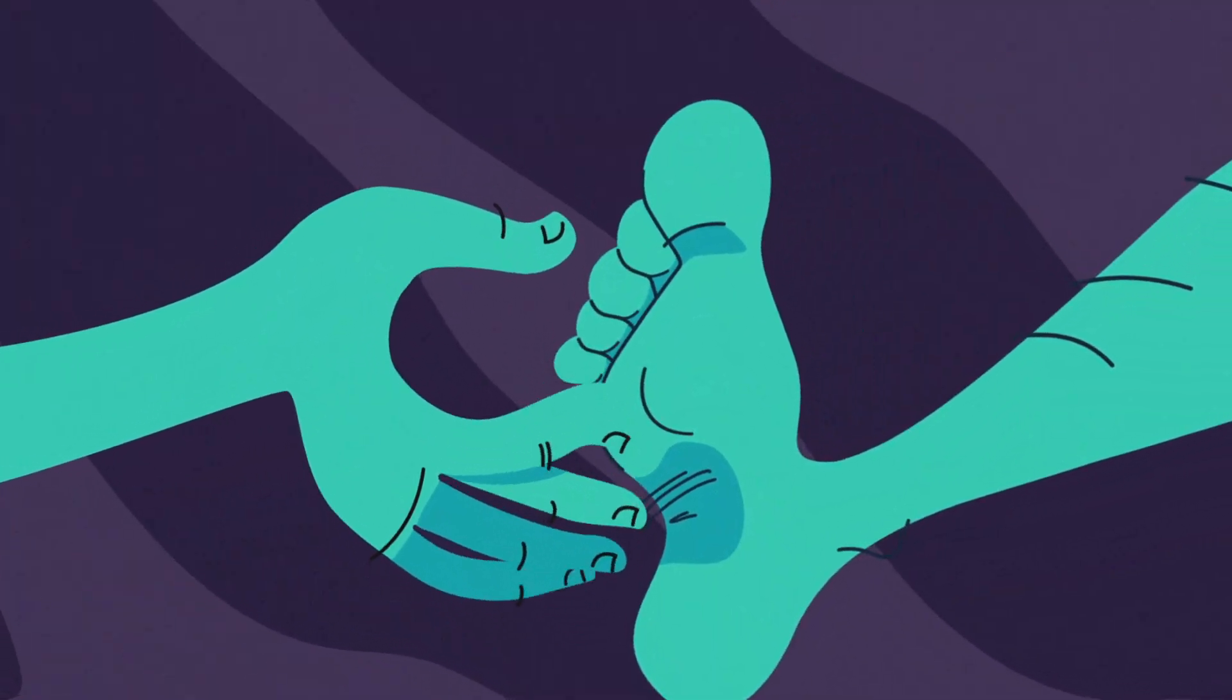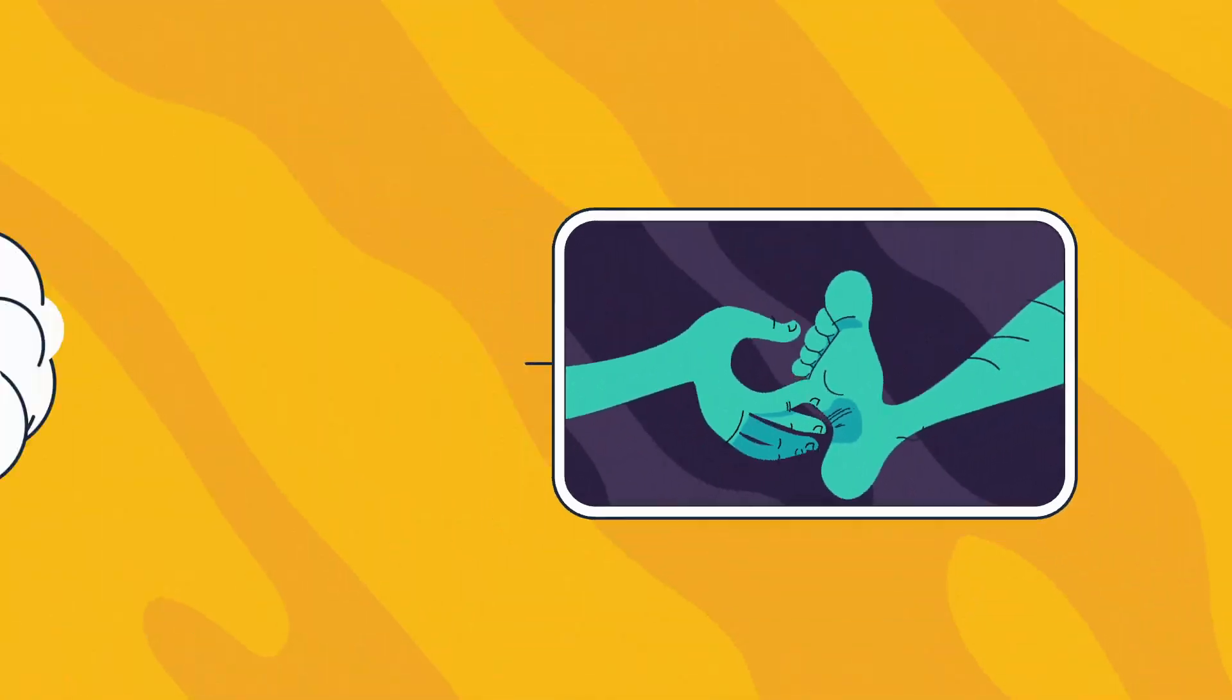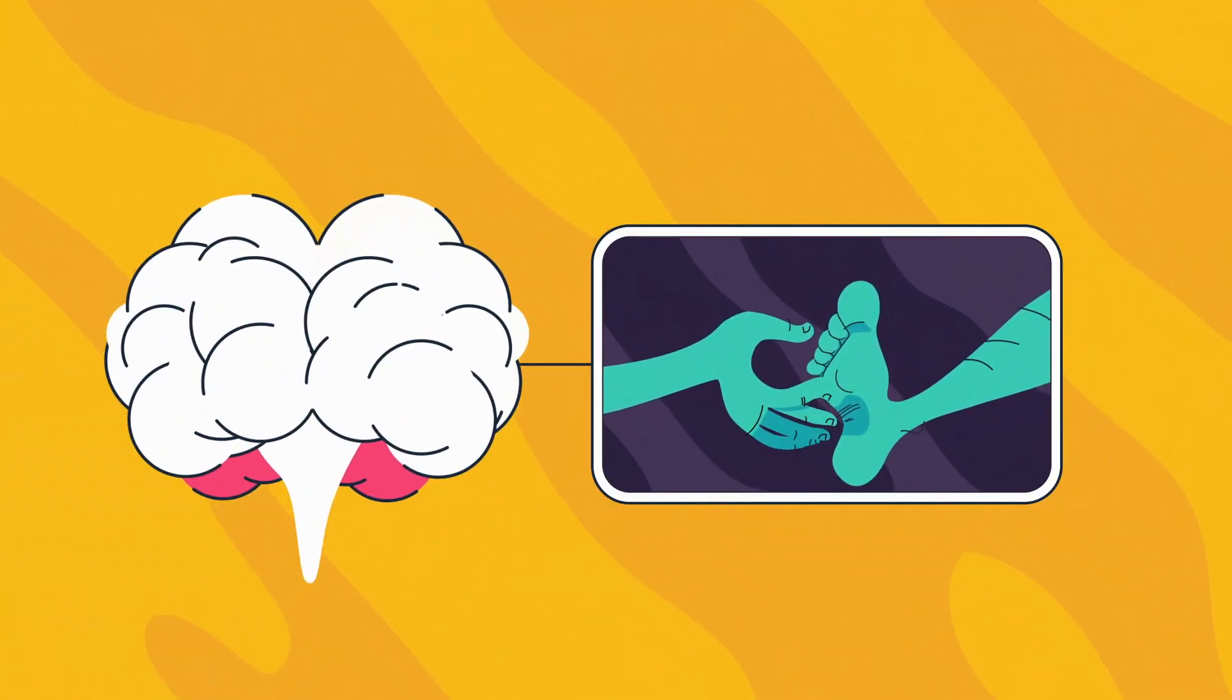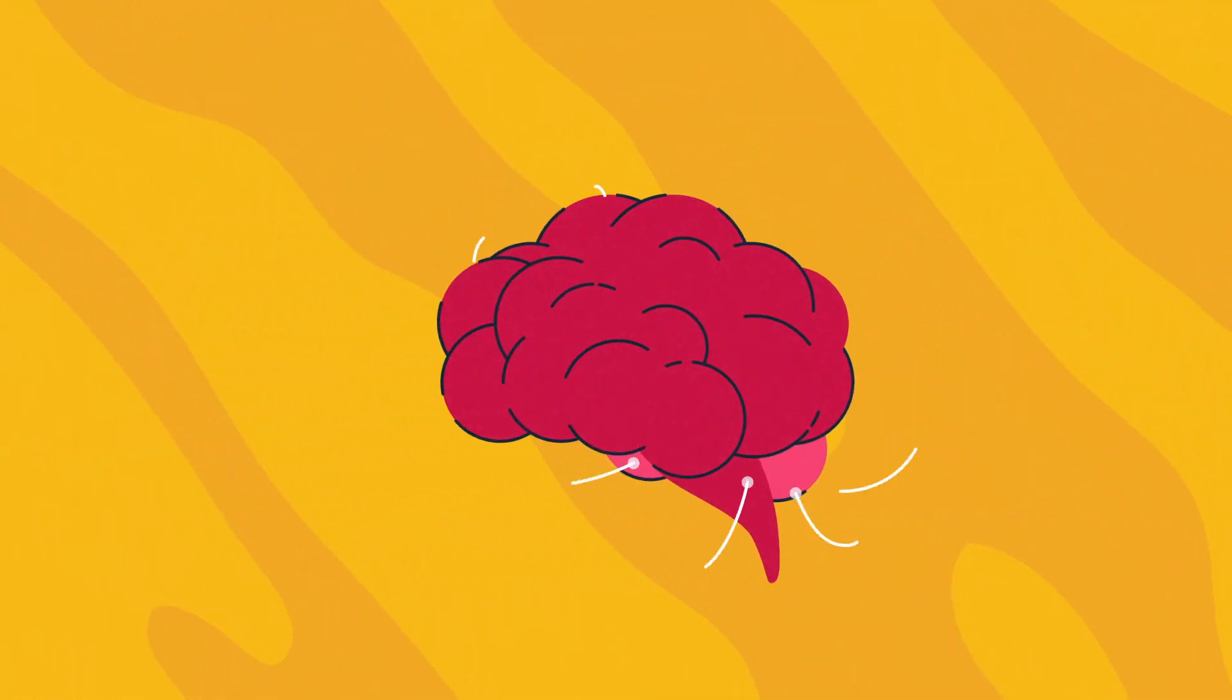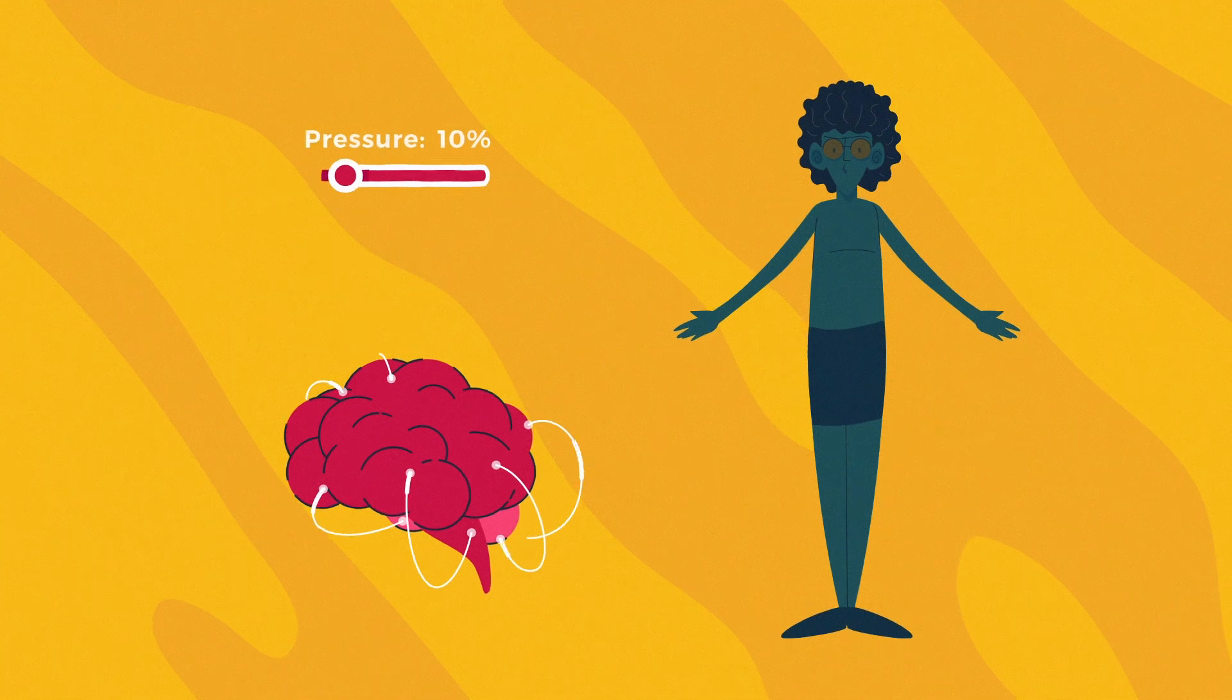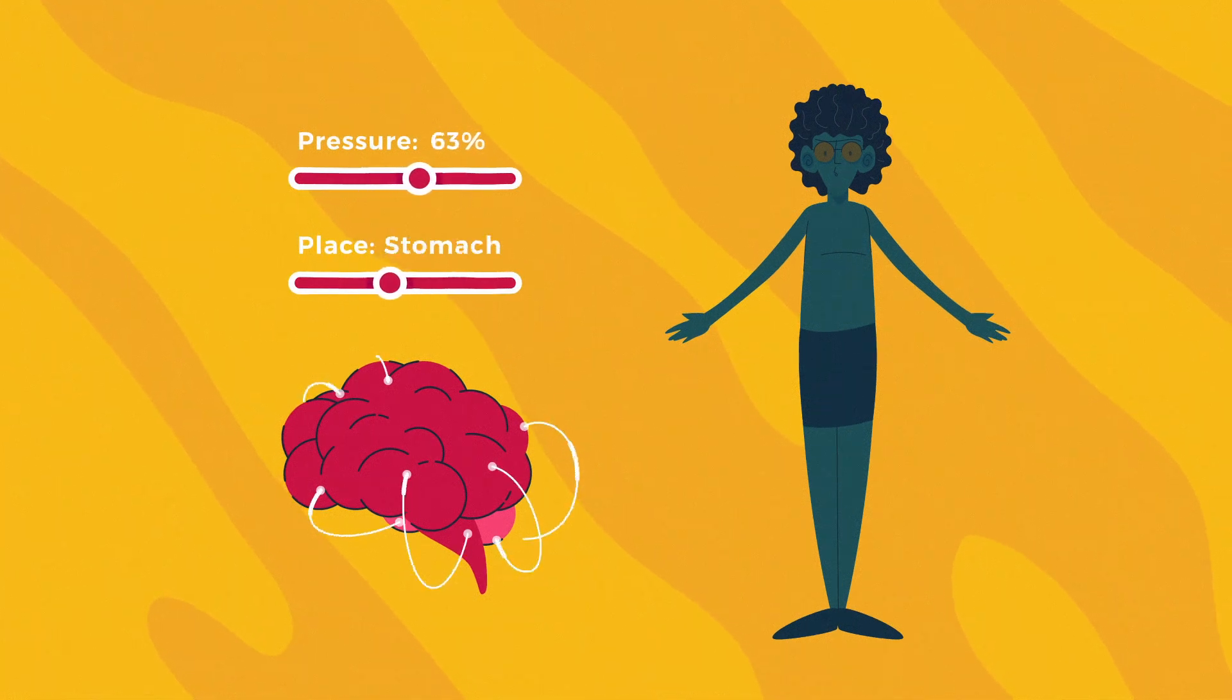But even if you tried, it's unlikely you can tickle yourself. That's because your brain's cerebellum predicts when you are about to apply pressure to your own body. The cerebellum communicates with other parts of your brain, sending signals when and where you're moving, and how much pressure you are likely to apply when you touch something.